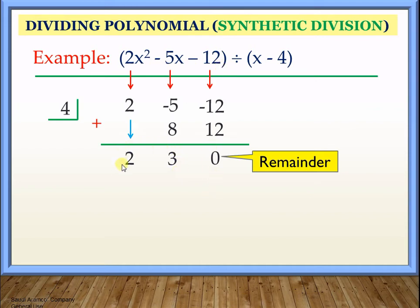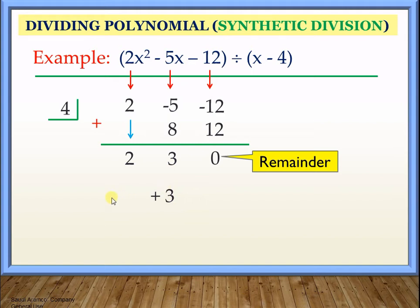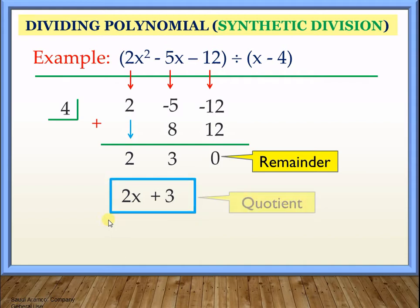Now, what are we going to do with these numbers? Notice here, from this part going to the left, we have no x, and in the next one we have x, and in the next one we have x squared. We're just going to follow that pattern when writing our quotient. So we have the positive 3, and the next one should have an x, so this will become 2x. Our quotient is simply 2x plus 3.